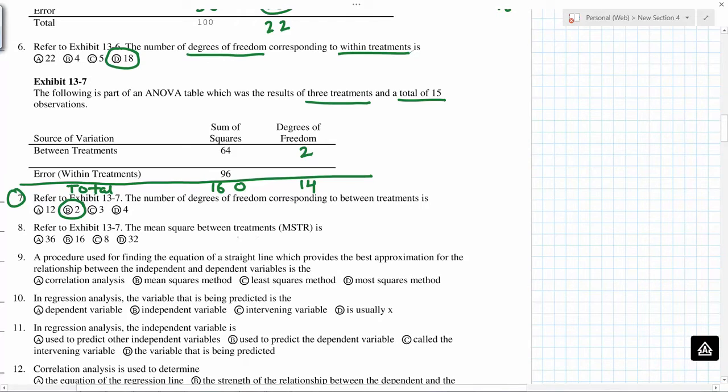The mean square between treatments, so if you extend these two, mean square, so 64 divided by 2 will be 32.